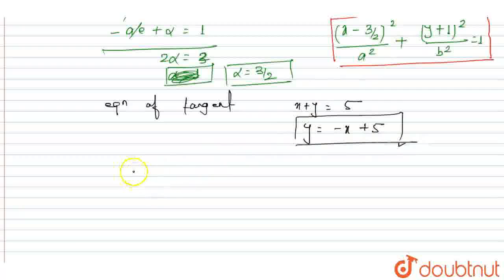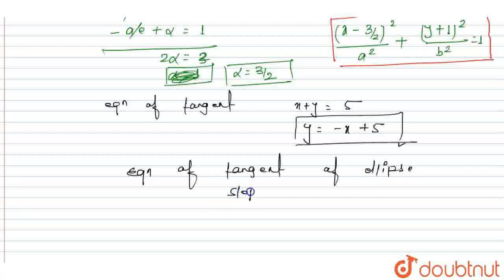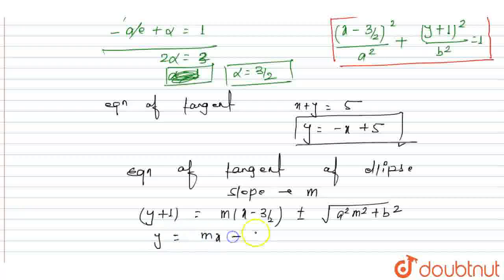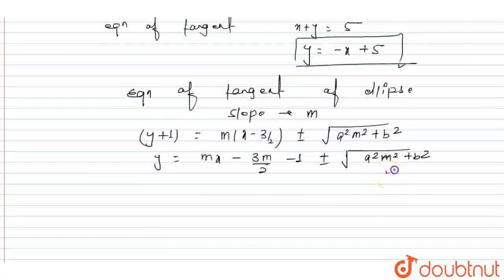The general equation of a tangent to the ellipse with slope m can be written as: y + 1 = m(x − 3/2) ± √(a²m² + b²). Rearranging: y = mx − 3m/2 − 1 ± √(a²m² + b²). Comparing this with the given tangent equation, we get m = −1.